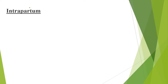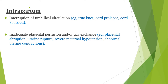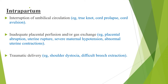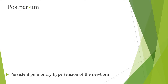Regarding intrapartum causes, interruption of umbilical circulation due to true knot, cord prolapse, or cord avulsion can predispose for asphyxia. Inadequate placental perfusion and/or gas exchange — like placental abruption, uterine rupture, severe maternal hypotension, or abnormal uterine contraction — can predispose for asphyxia. Traumatic delivery like shoulder dystocia and difficult breech extraction can also be a risk factor for perinatal asphyxia. Abnormal maternal oxygenation during the intrapartum period, for example pulmonary edema, is another cause.